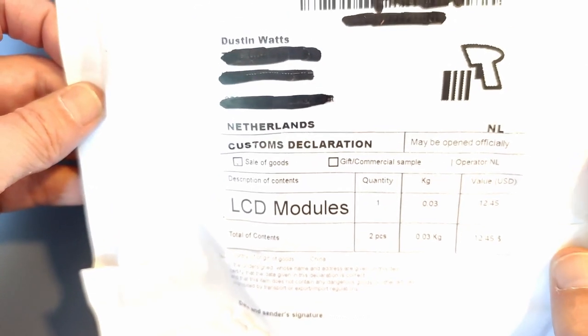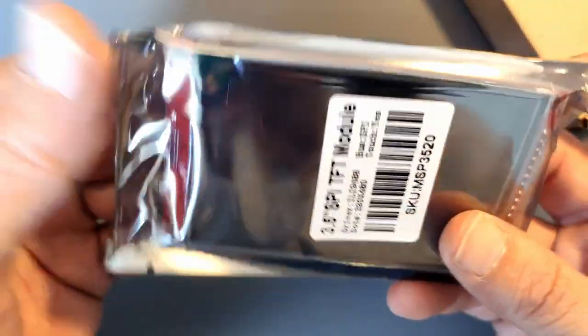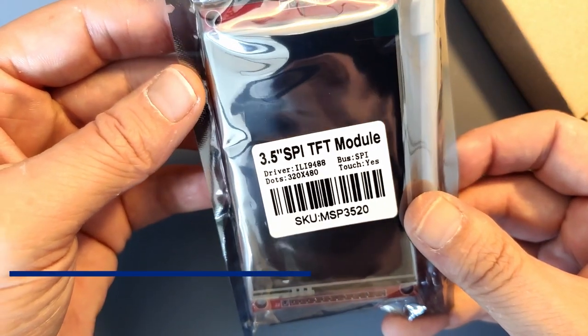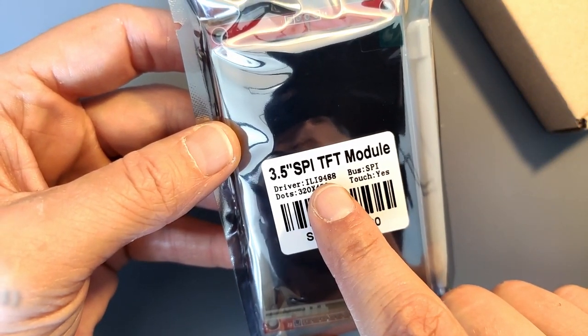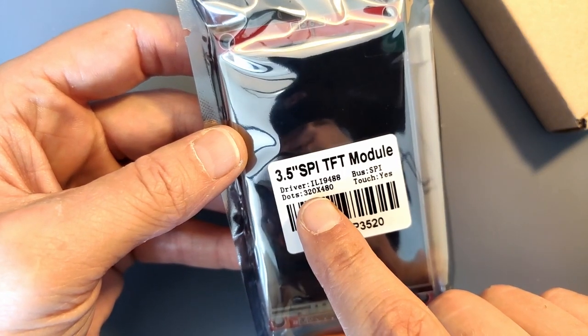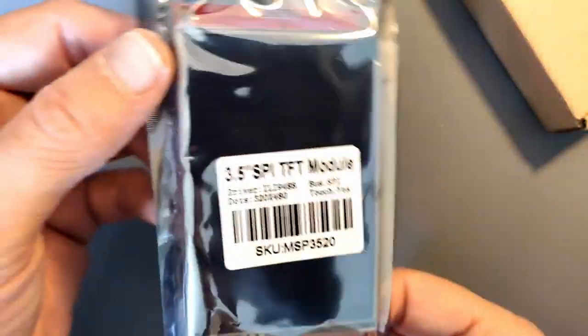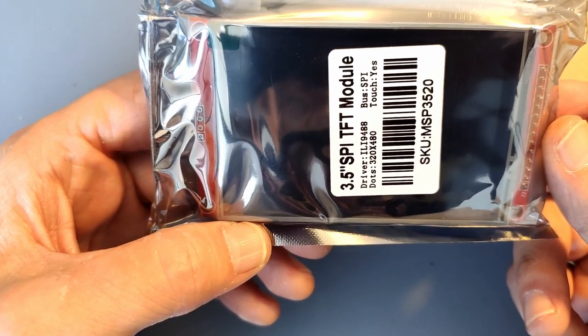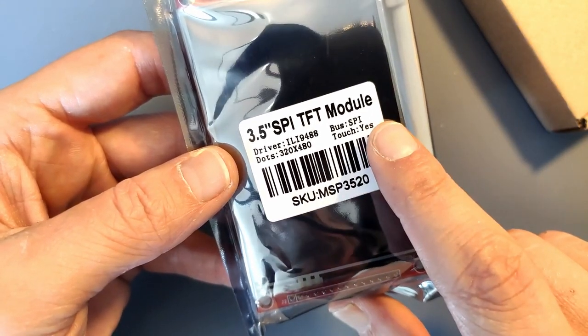And the last one for today. LCD modules. Kind of big. Right, let's start with the case. Let's save the case for last and start with this one. It is a 3.5 inch SPI TFT module. And it uses the ILI 9488 driver. It is 320 pixels by 480. Or, well, depends on how you hold it right. Could be 480 by 320. The model number is MSP3520. And this is with touch.